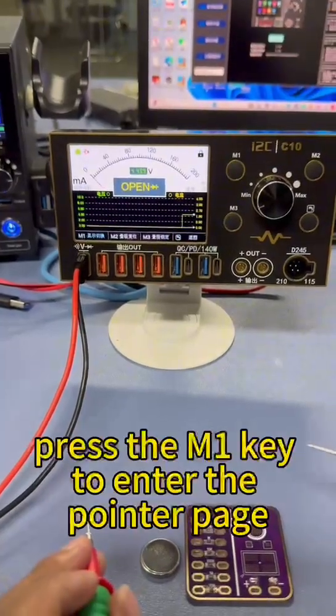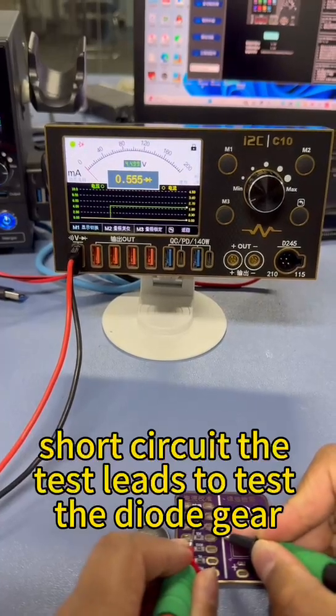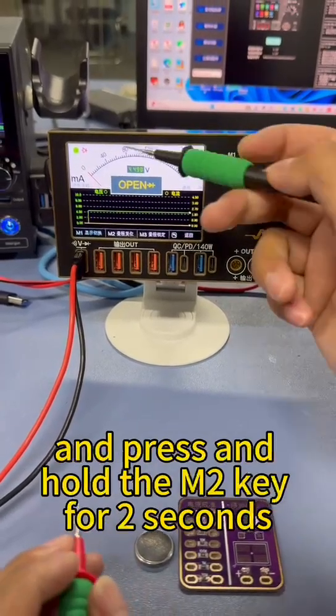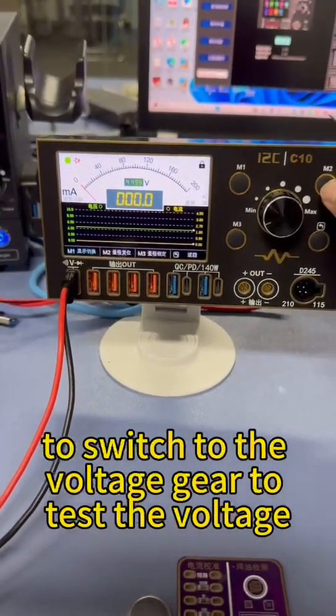Press the M1 key to enter the pointer page. Short circuit the test leads to test the diode gear, and press and hold the M2 key for 2 seconds to switch to the voltage gear to test the voltage.